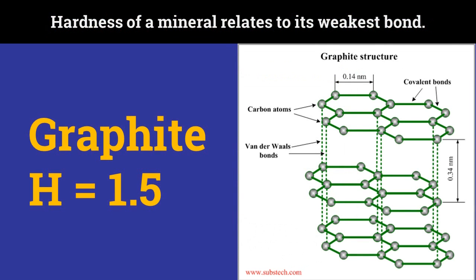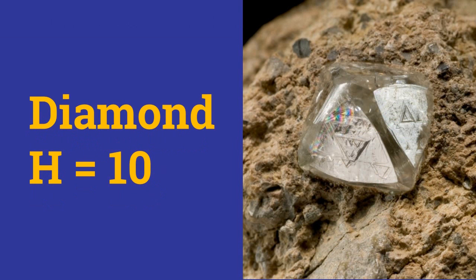Now let us look at the hardness of some minerals you ought to know. Graphite has a hardness of 1.5, and it demonstrates an interesting concept: the hardness of a mineral relates to its weakest bond. The covalent bonds of graphite are as strong as those of diamond, but the weak van der Waals bonds make graphite so soft. Diamond has a hardness of 10 because its covalent bonds are extremely strong.